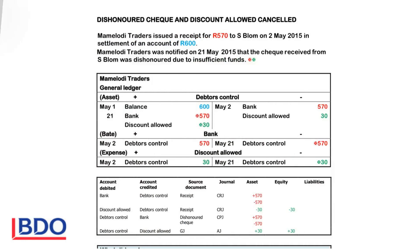Good morning. We will pay attention to dishonoured cheques and the discount that must be cancelled on a dishonoured cheque. Mamalodi Traders issued a receipt for 570 on the 2nd of May in settlement of an account of 600. The debtor's balance was 600.